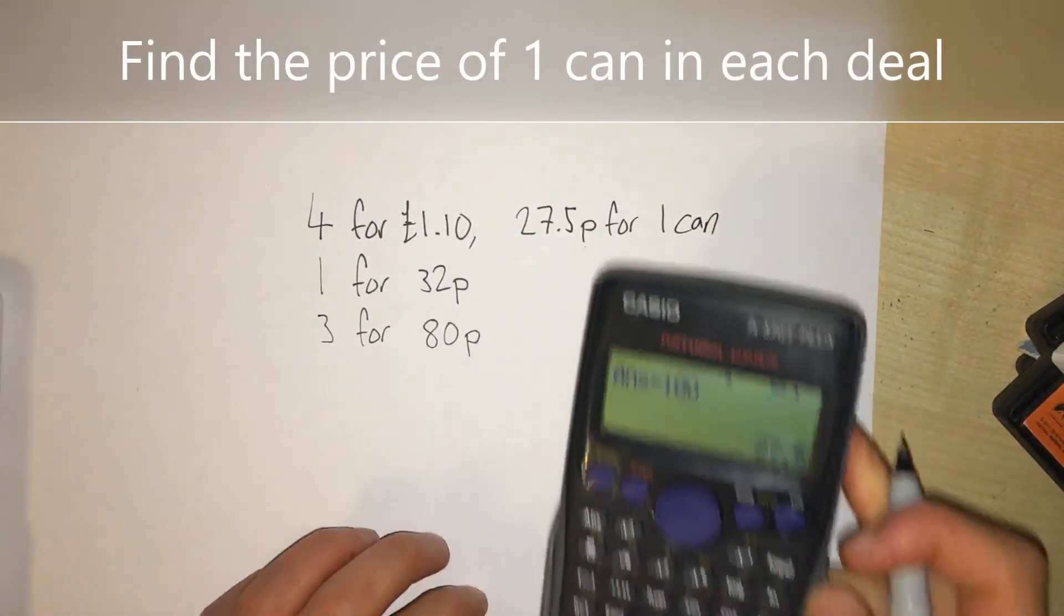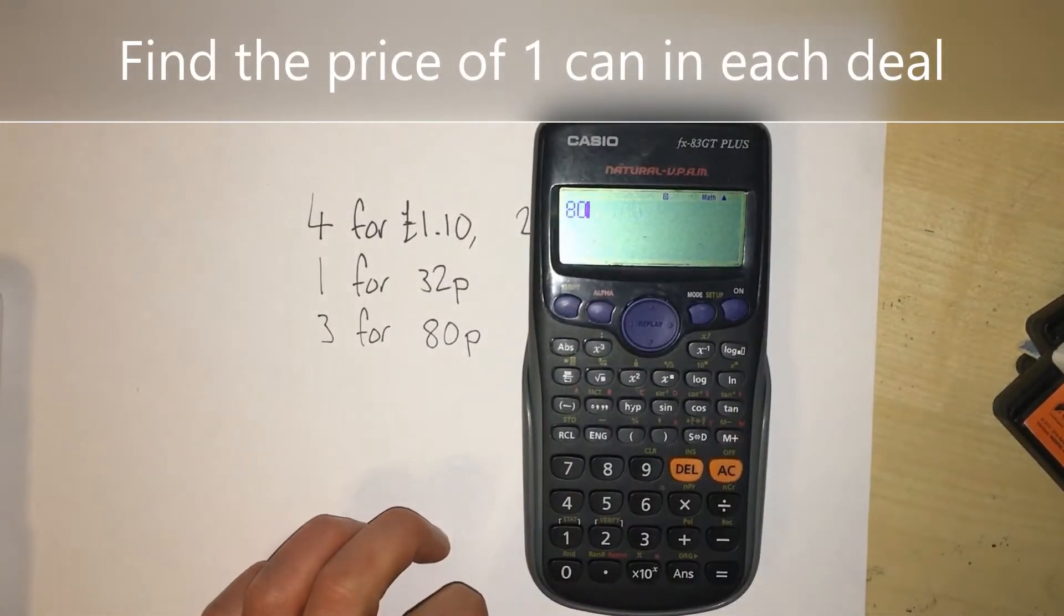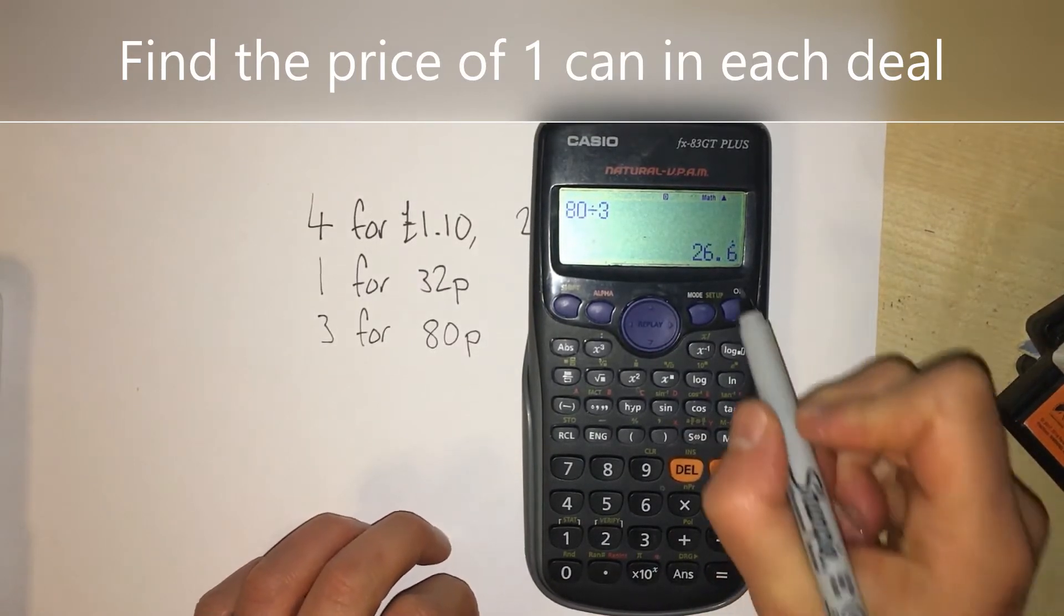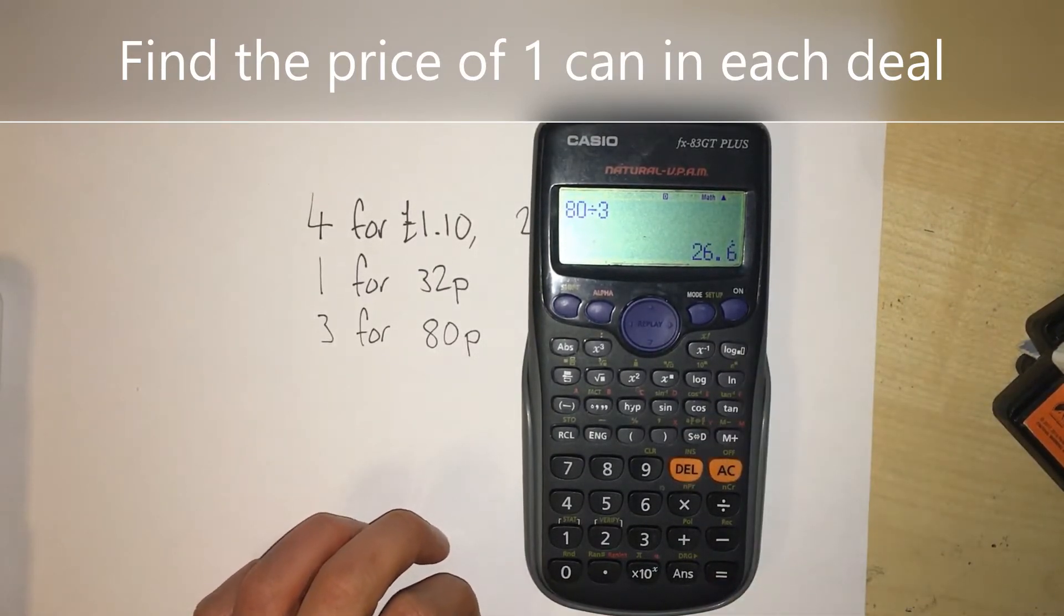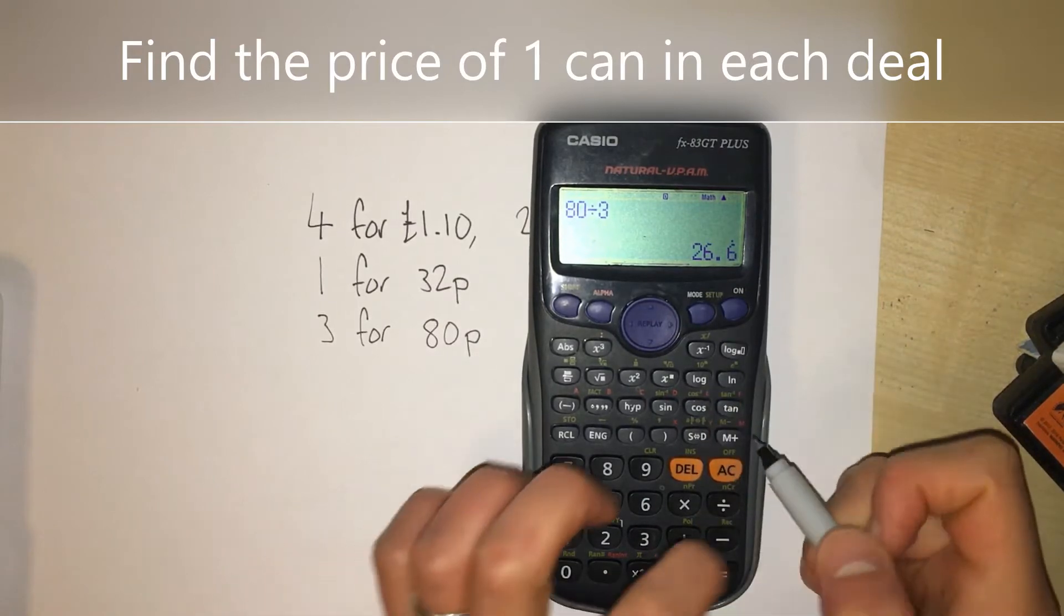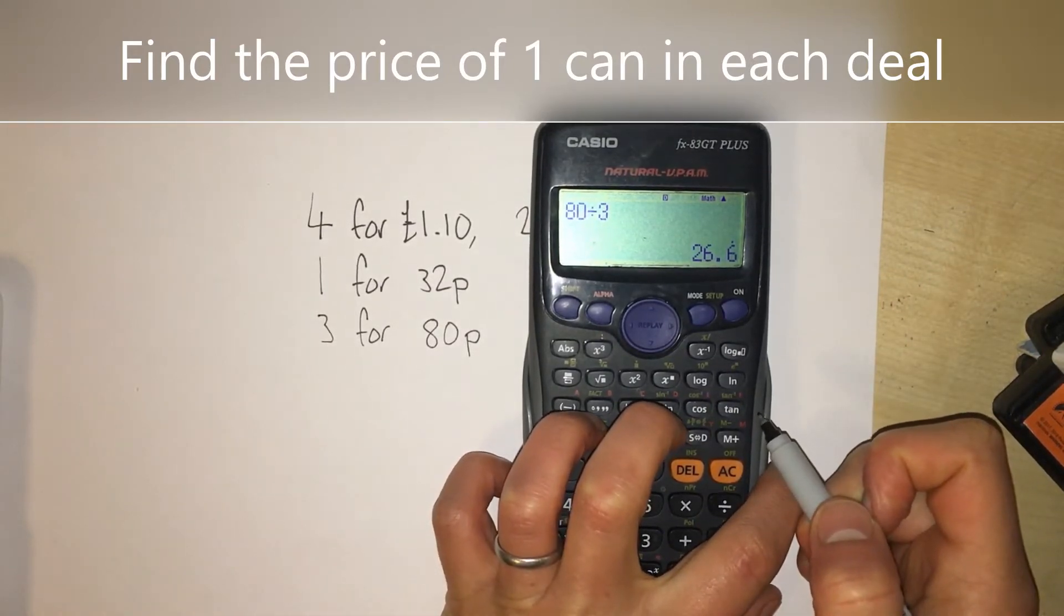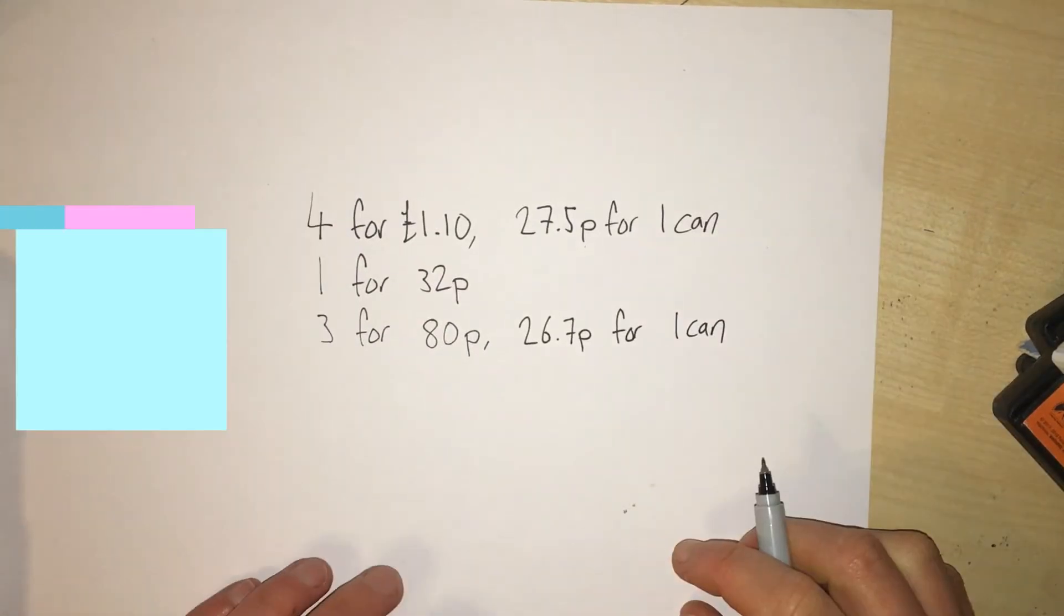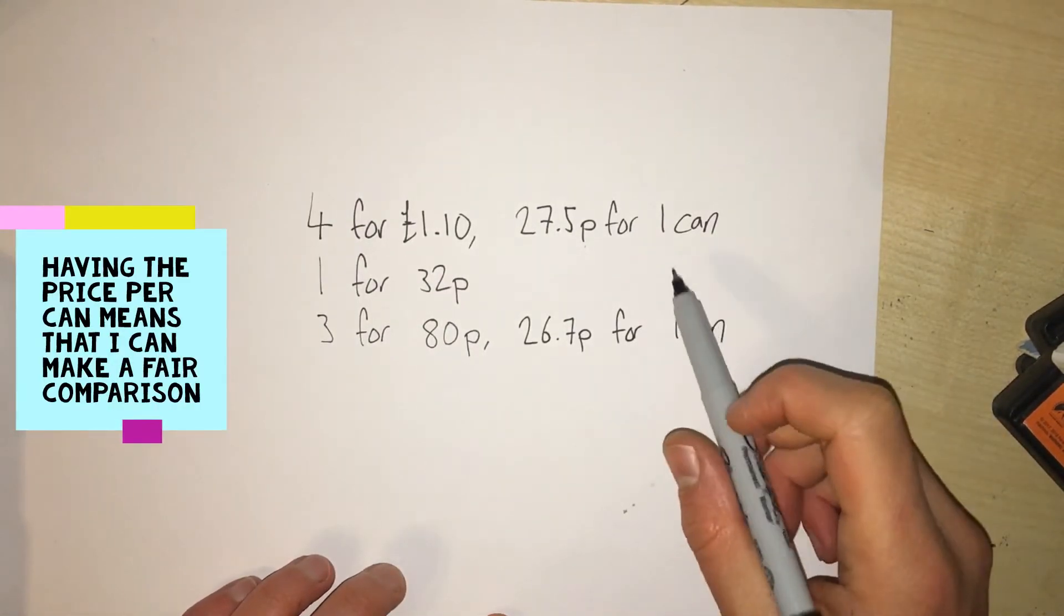Let's have a look at the last one. 80p divided by 3 tells me it's 26.6 recurring pence. I'll call that 26.7 by rounding it to one decimal place. Now I have the price for each can, or the price per can.